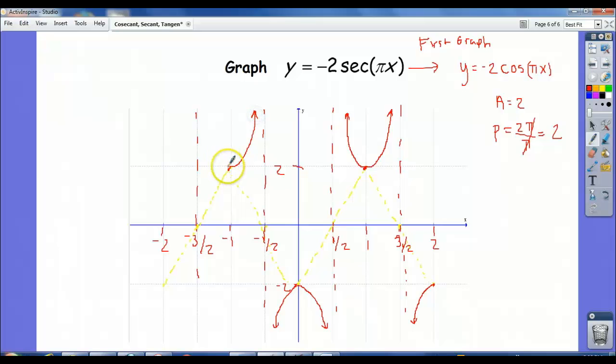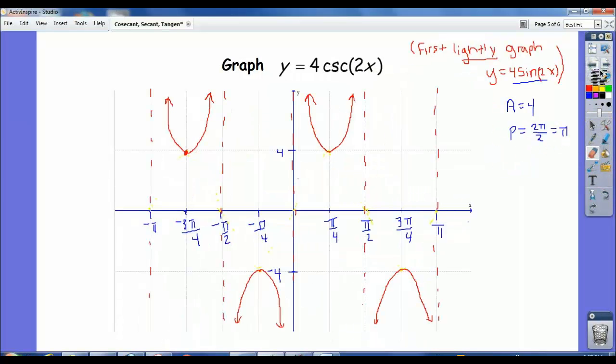All right. So notice, again, if you can graph the basic sine and cosine graphs, then your ability to graph the secant and cosecant graphs is strong. Because the graphs of the secant and cosecant graphs, at least the way I try to explain them, depend very much on their parent functions. I use them as like the crutch. Like graphing negative two cosine of pi x is a crutch that helps us graph secant and cosecant. But we do erase them afterwards because they're not part of the graph. And so there we have it. We've got our graphs of negative two secant pi x and our graph of four cosecant 2x.